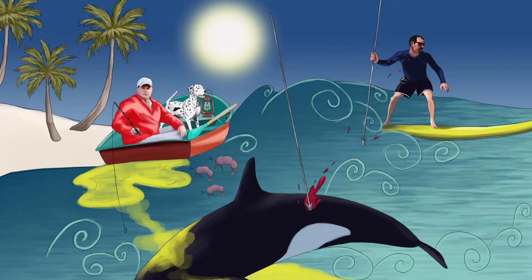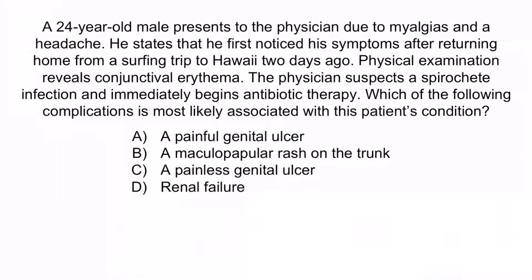From the image, recall that the shrimp shaped like kidneys are here to help you remember that Weil's Disease can cause renal failure. Choice A is associated with Haemophilus ducreyi and is a red herring. B is also a red herring because it can be confused with the rash caused by syphilis, which is a spirochete; however, the maculopapular rash of syphilis classically involves the palms and soles, and syphilis does not cause conjunctival erythema in surfers. C describes the classic painless genital ulcer seen in syphilis, and again, while syphilis is a spirochete, it does not cause conjunctival erythema in surfers. So the correct answer is D, renal failure.